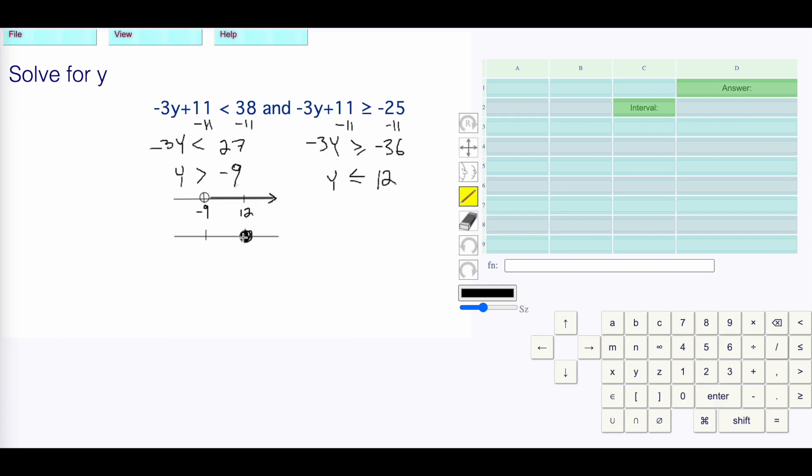Then for my other number line, y ≤ 12, here we have a solid dot and everything less than or equal to 12, so we're going to go this way. What is common between those two? Because we're doing AND, which is intersection.